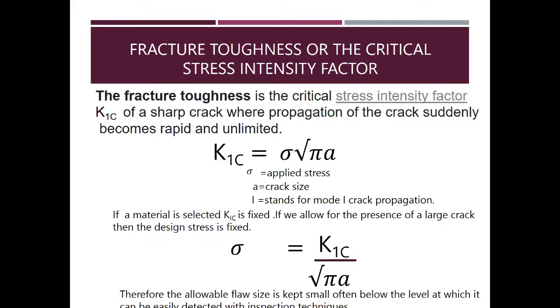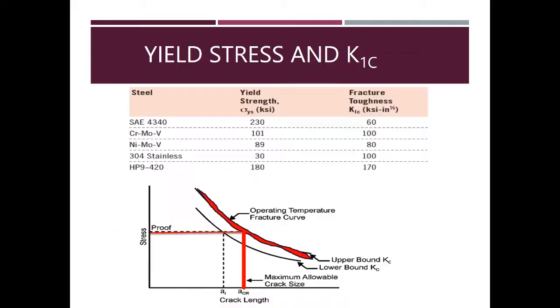The tabulation shows the yield stress and K1C values for different types of steels. Here you can see in this graph the stress is directly proportional to the crack length, and there is a maximum allowable crack size for a particular operating temperature fracture curve and an upper bound K1C value. A lower bound K1C value can also be fixed for a crack length. This is the safety criterion.